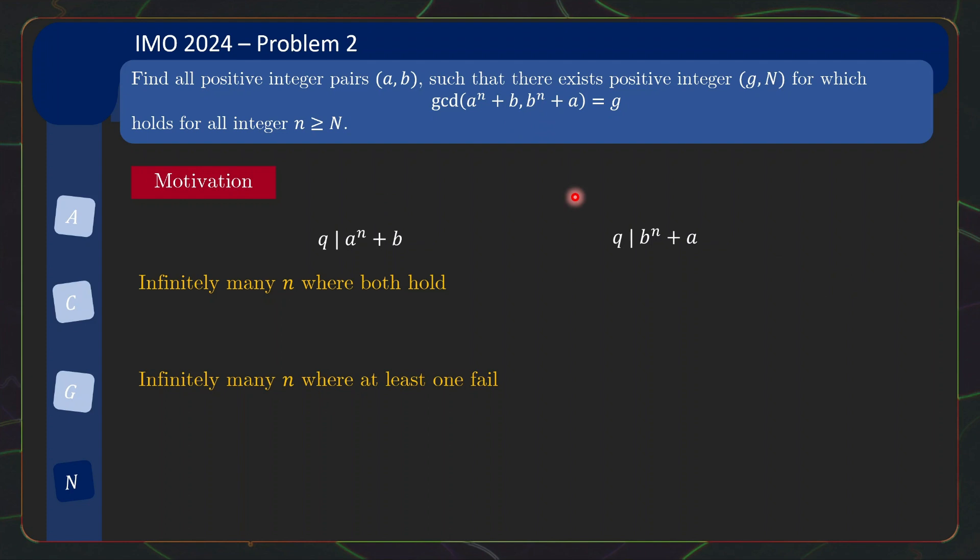And this will then eliminate those a, b as valid solutions. Now it is quite simple to prove the first, to construct the first one once you have at least one valid solution of n. So if n_0 is some value of n where both divisibilities hold, you can actually very quickly construct all the other infinitely many values of n where both divisibilities hold by using the Euler phi function.